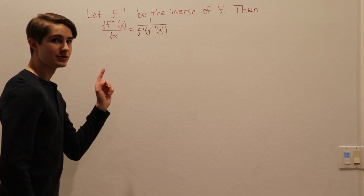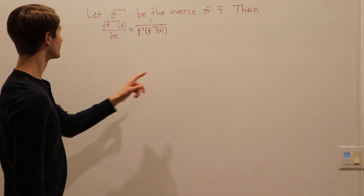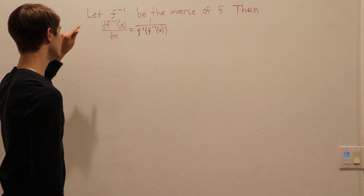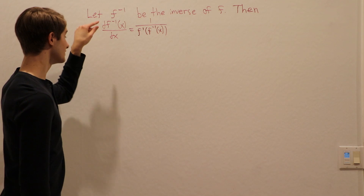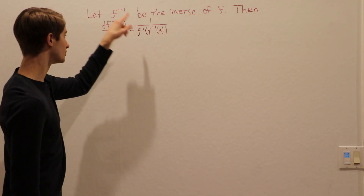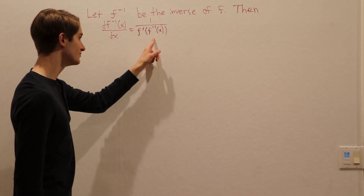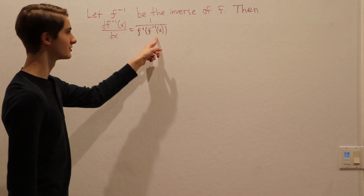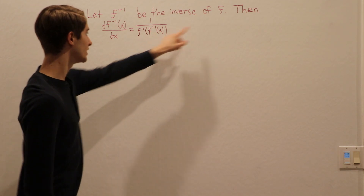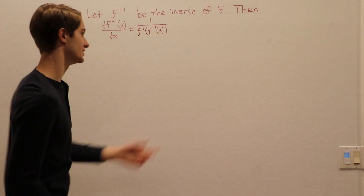We are going to let f inverse be the inverse of f. We want to prove that the derivative of the inverse function is equal to 1 over f prime of f inverse of x, where f prime is the derivative of the original function f.